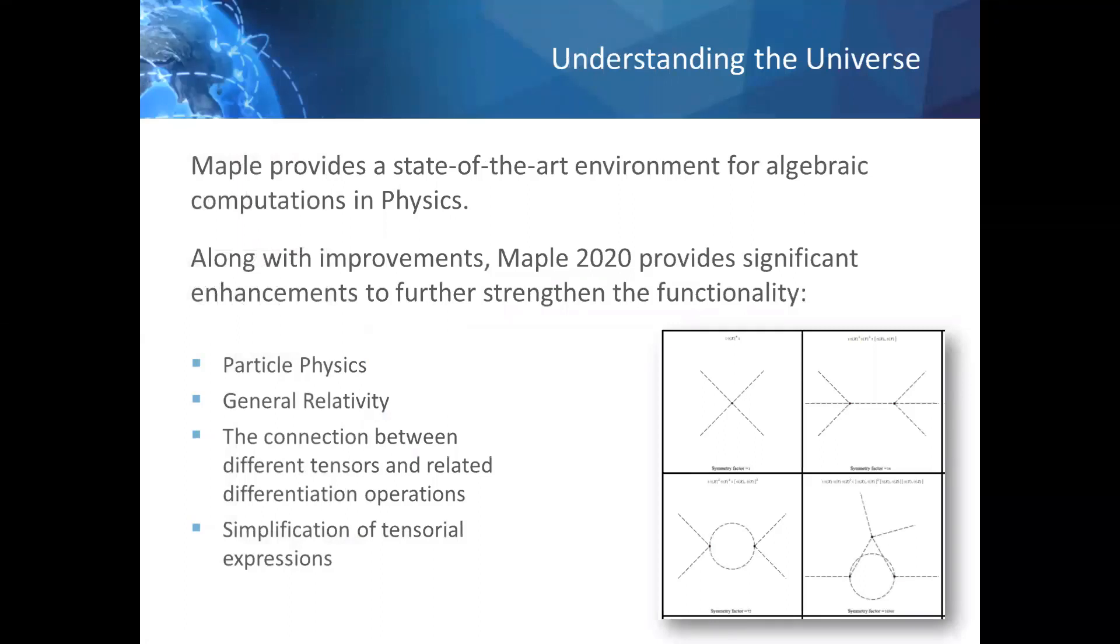Maple provides a state-of-the-art environment for algebraic computations and physics, with emphasis on ensuring that the computational experience is as natural as possible. Along with general consolidation and improvements, Maple 2020 provides significant enhancements to further strengthen the functionality for physics in the area of particle physics and general relativity. Having said that, Maple is the world's best tool, hands down, for doing tensor computations of physics. Our developer is very passionate about this subject and he's been refining this functionality over the last few releases, and this year is no exception. If you have specific questions about the physics package in Maple, take a look at Maple Primes. Our developer is often posting white papers and responding to user questions.